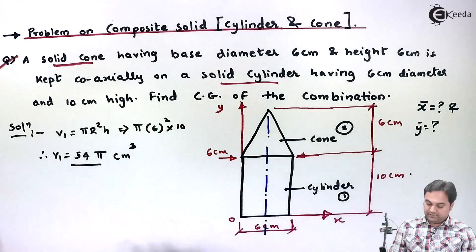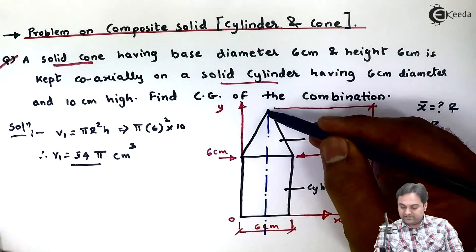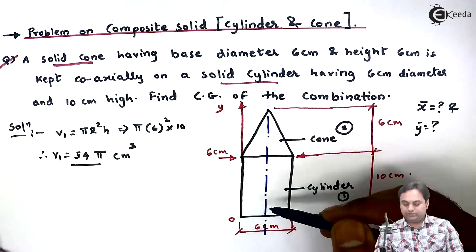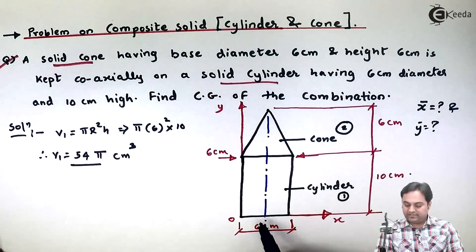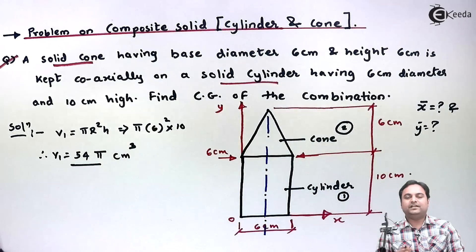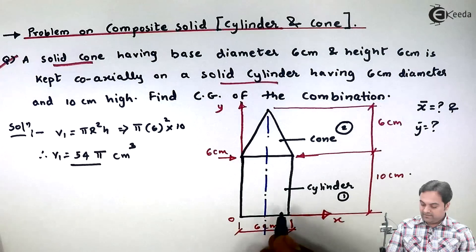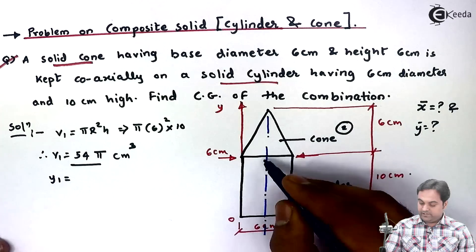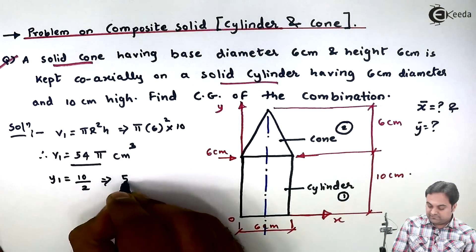After getting V1, since we can see this composite solid is symmetric about Y axis, the X bar distance we can directly get it from the diagram. X bar will be half of 6 centimeter, that is 3 centimeter. So in this problem there is no need to calculate X bar. We can directly go on for the calculation of Y bar. So after getting V1, Y1 will be equal to half of the height of cylinder. So it is 10 by 2. So Y1 is 5 centimeter.